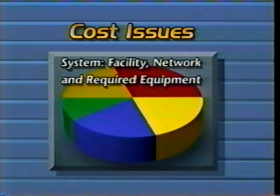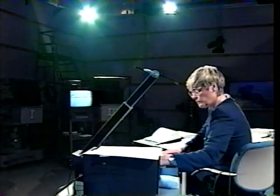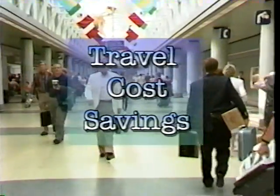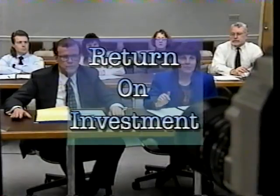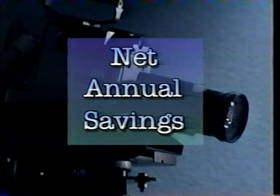You should also identify specific costs associated with the systems you are considering, including costs of the system itself — the facility, the network, required equipment, personnel, and pre-production, production, and operations. A one-way video with audio system uses a studio with technical production staff, resulting in higher quality but at a higher cost. A two-way video and audio system has lower production costs but greatly increases instructor responsibilities. Use the size of your student population to determine the cost trade-off, and calculate how much you will save on travel with teletraining to find your return on investment and net annual savings.